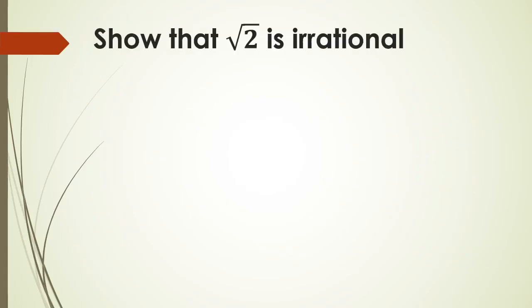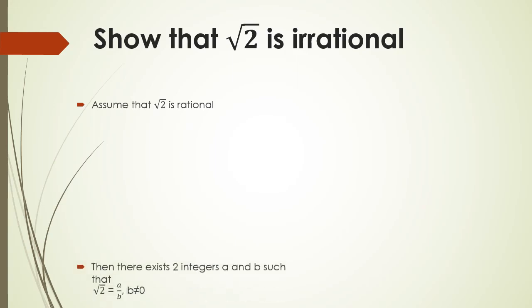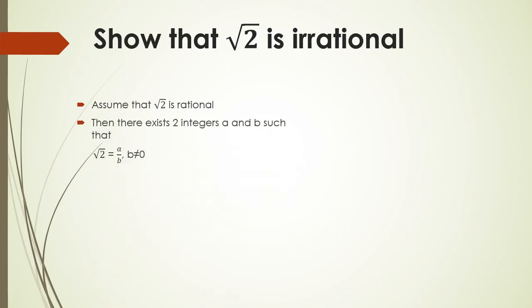Next, show that the square root of 2 is irrational. We assume that the square root of 2 is rational. By the definition of rational, there exist two integers A and B such that √2 = A/B where B ≠ 0, and A and B have no common factor. So we assume √2 = A/B is rational, then square both sides.